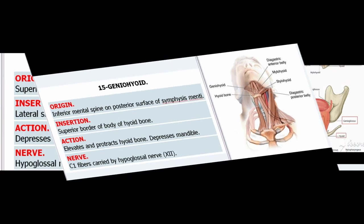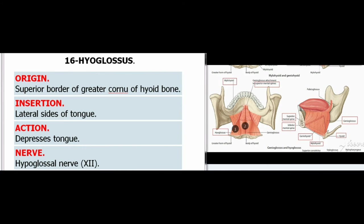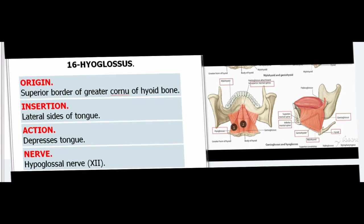16. Hyoglossus. Origin: Inferior and superior border of greater cornu of hyoid bone. Insertion: Lateral sides of tongue. Action: Depresses tongue. Nerve: Hypoglossal nerve (XII).